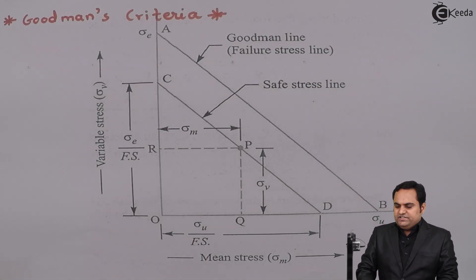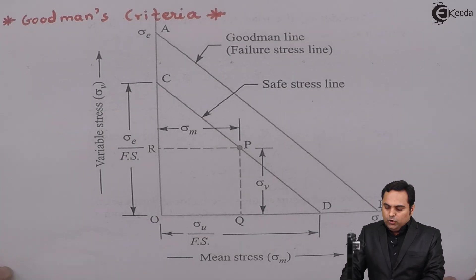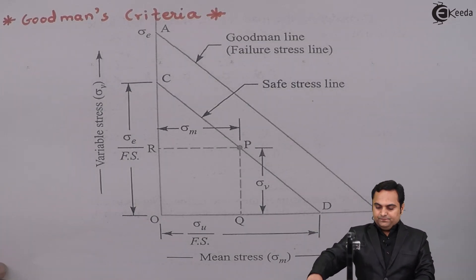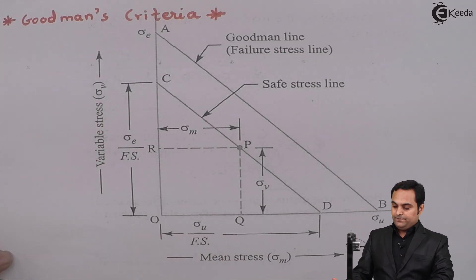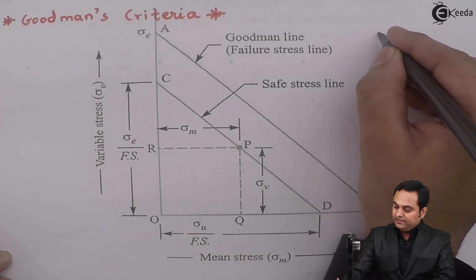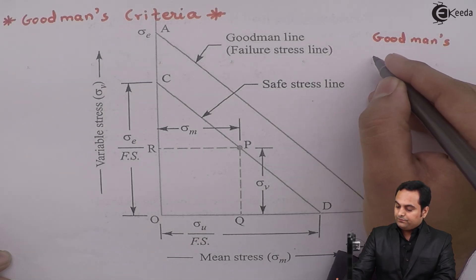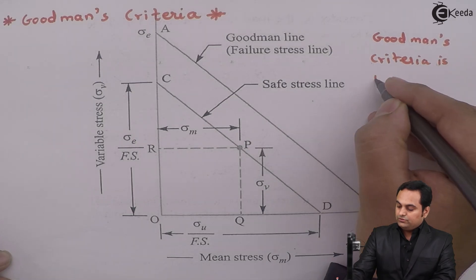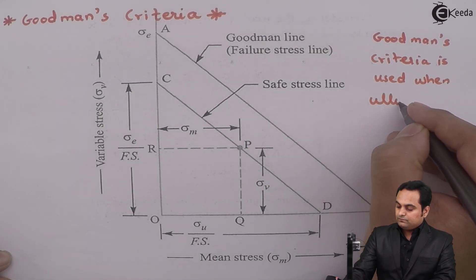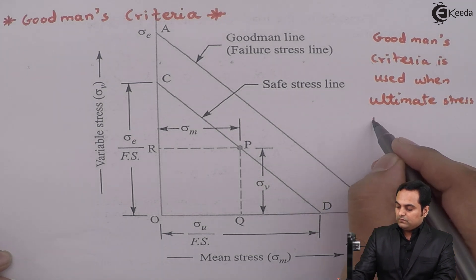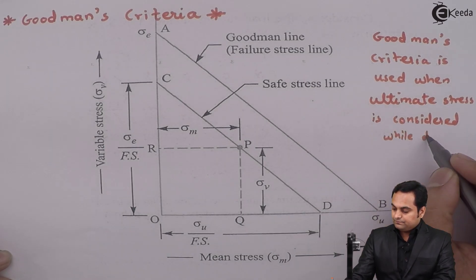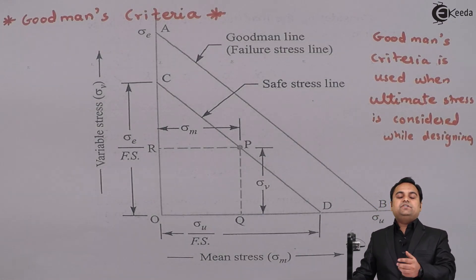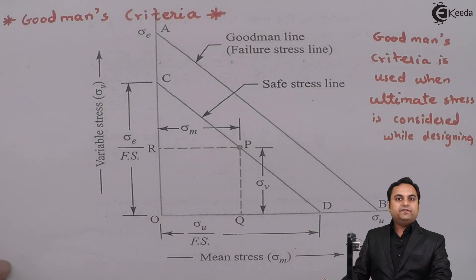Hello friends, in this video we will see what is meant by Goodman's criteria along with the Goodman's line. We have a diagram which is also called the diagram of Goodman or Goodman's criteria. Goodman's criteria is used when ultimate stress is considered while designing, so when we are taking the ultimate stress into account, we have to use Goodman's criteria.